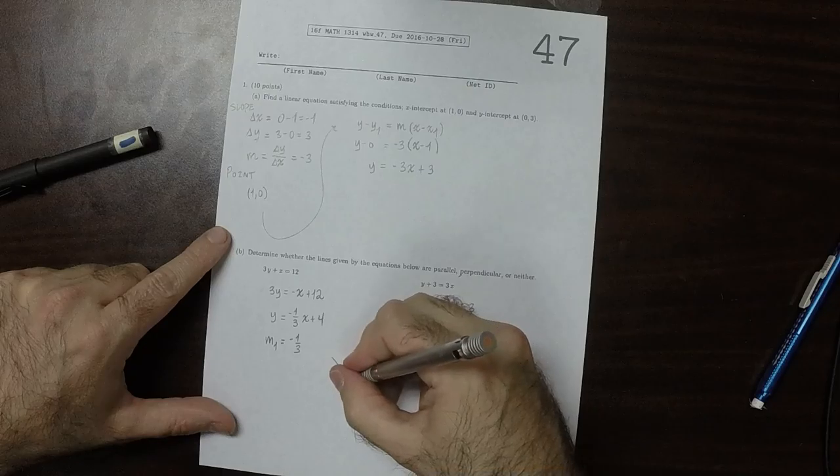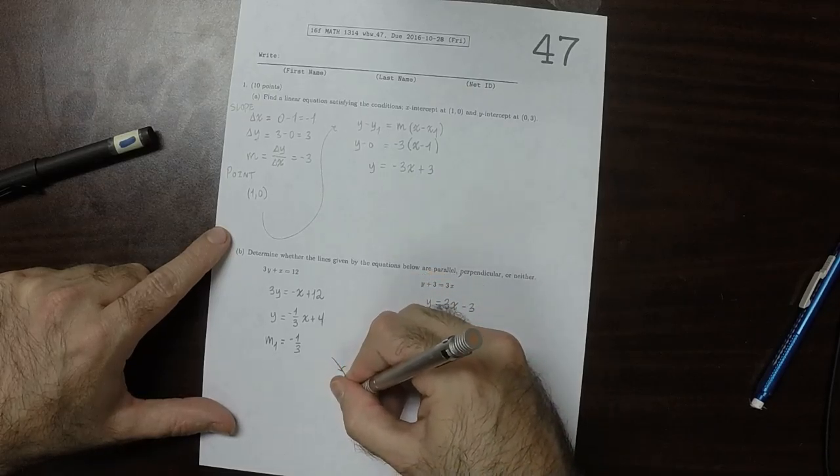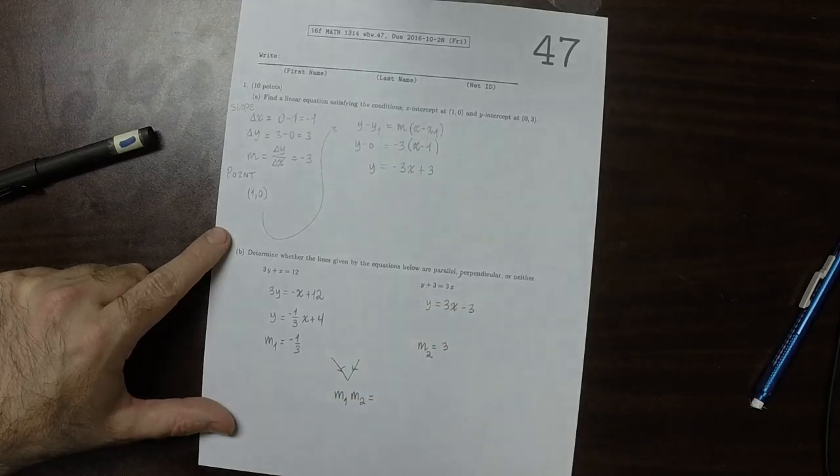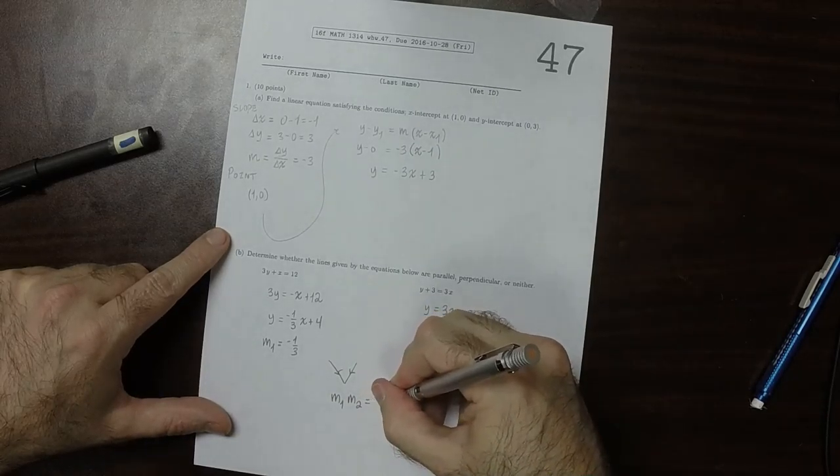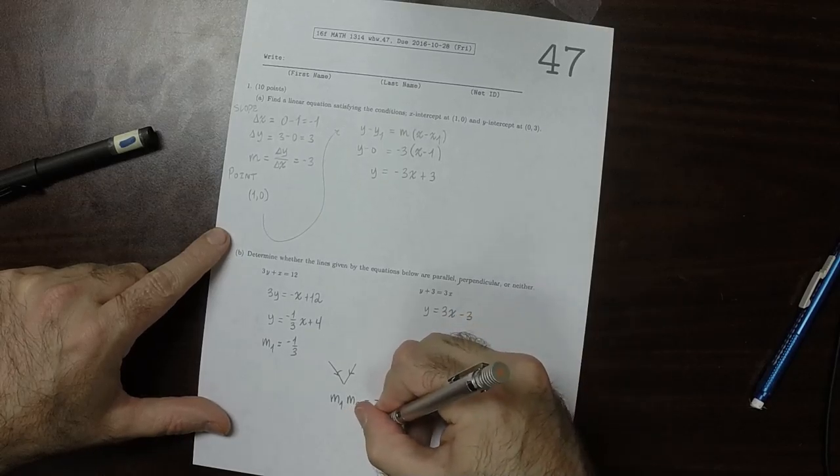And we'll take these two together. So the product m1 times m2—well, that's negative 1 third multiplied by 3, which is negative 1.